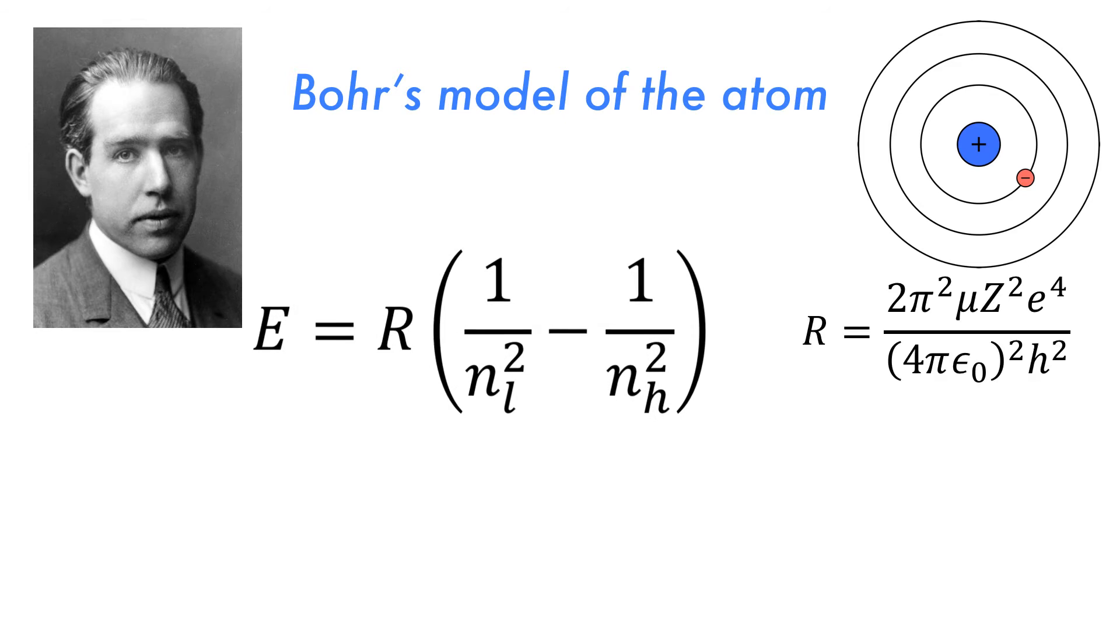Here R takes on this meaning, with many of the symbols having their normal meaning, such as pi being pi, mu being the reduced mass, z is the charge, e is the charge of an electron, 4 times pi times epsilon zero is the relative permittivity of a vacuum, and h is just Planck's constant.